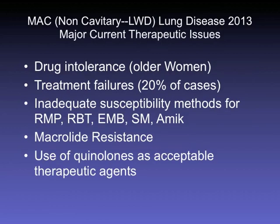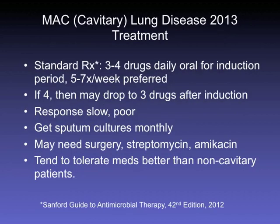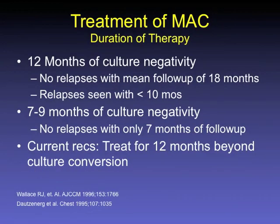Remember the importance of clearance mechanisms, especially in Lady Windermere patients — you really want them to cough and expectorate. Therapeutic issues include drug intolerance in nodular bronchiectatic patients, treatment failures, inadequate susceptibility methods for non-macrolide drugs particularly in MAC, and macrolide resistance especially if weak combinations are used early on. Duration of therapy is 12 months of culture negativity — patients do best when treated for that full duration, with fewer relapses.